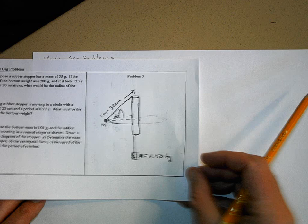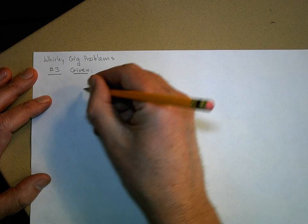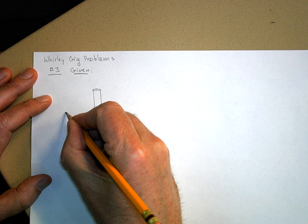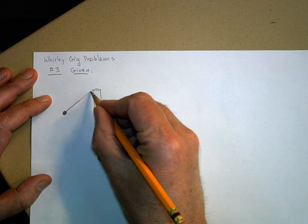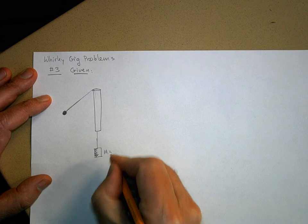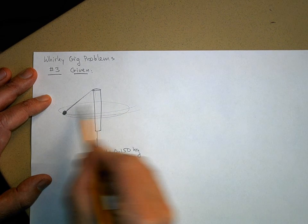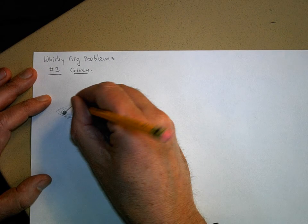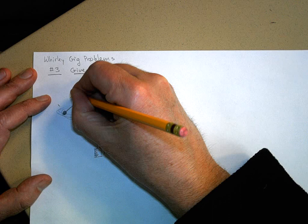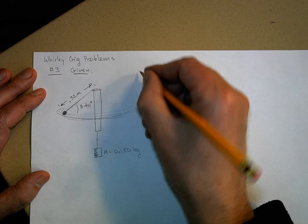So I'm going to redraw this picture. Here's what's given. We've got a PVC pipe, a string, here's our rubber stopper, and the string comes down and hangs on a mass. This mass, capital M, is 0.150 kilograms. This is moving around in a circle, and theta equals 40 degrees. The length from here to here is 0.32 meters.